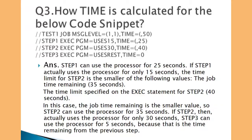Moving to question number three: how is the TIME parameter calculated for the code snippet given in this slide? In this JCL, a few TIME parameters are coded — one at the job level and the other three at the step levels. If you code a TIME parameter for a particular step, it will be applicable for that step only. However, the time consumed by all the steps should not exceed the time mentioned in the JOB statement.